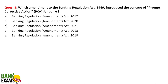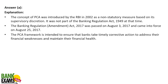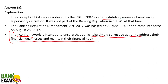Question number 3: Which amendment to the Banking Regulation Act 1949 introduced the concept of Prompt Corrective Action (PCA)? The PCA framework existed before but was not part of the Banking Regulation Act. It became part of the Act through the 2017 amendment — before that it was a non-statutory measure. The purpose of the PCA framework is to ensure that banks take timely corrective action to address their financial weaknesses and maintain financial health, safeguarding depositors' money.